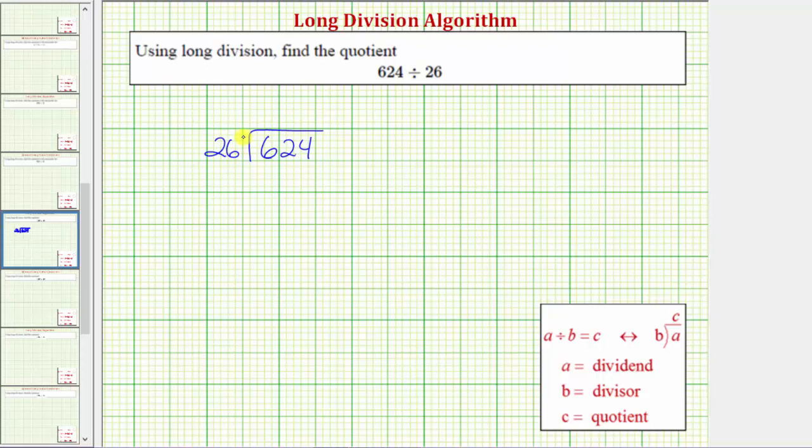To begin performing long division, we consider the leftmost digit of the dividend, which is the 6 in 624. But because 6 is less than the divisor, or less than 26, we know there are zero 26s in 6, and therefore we also consider the next digit. So we consider 62.